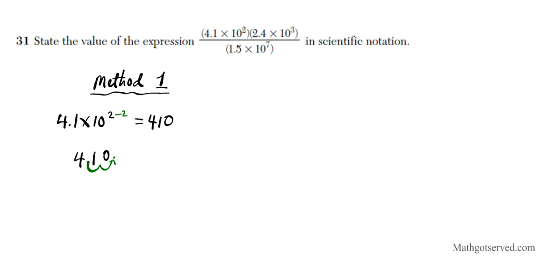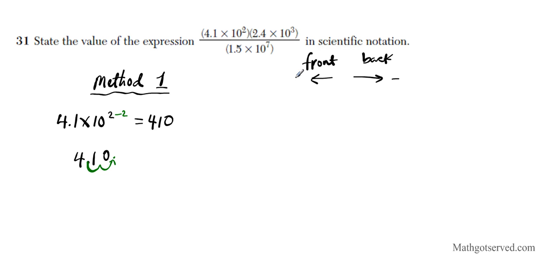Remember: when your decimal point is moving forward toward the front of the number, you add to the power. When you're moving it backward, you subtract from the power. So front means add, backward means subtract. In this case, we moved it to make 410, so we subtracted 2 from the power.